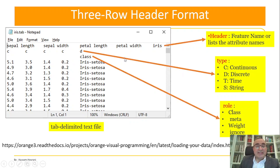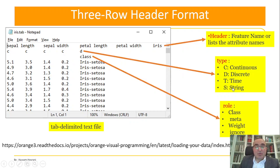The first column is 'c' — c means continuous value, i.e., numbers. 'D' means discrete, which means specific values. For example, in 'd' we have the class which is either Setosa, Versicolor, or Virginica — they call it discrete. You might also have 't' or 's'.